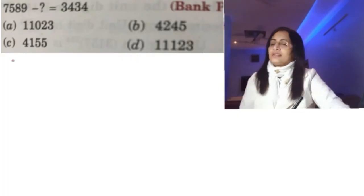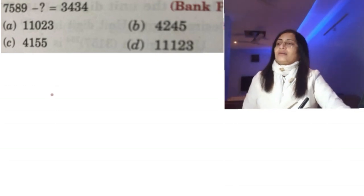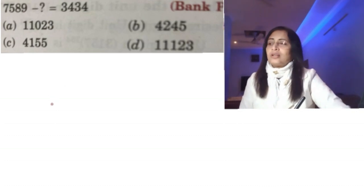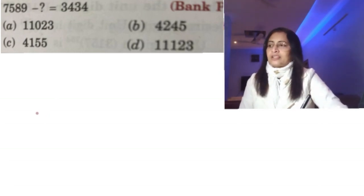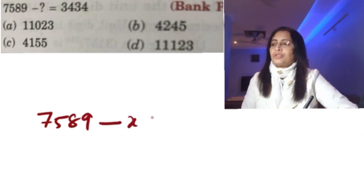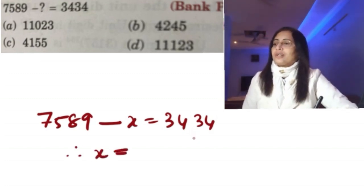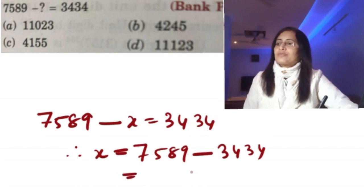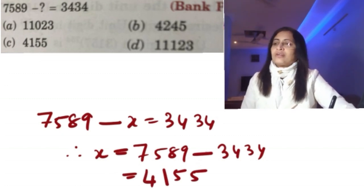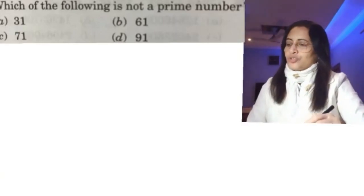Question: 7589 minus what equals 3434? We treat the unknown as X, so 7589 minus X equals 3434. Solving: 9 minus 4 is 5, 8 minus 3 is 5, 5 minus 4 is 1, 7 minus 3 is 4. The answer is 4155, which is option C.